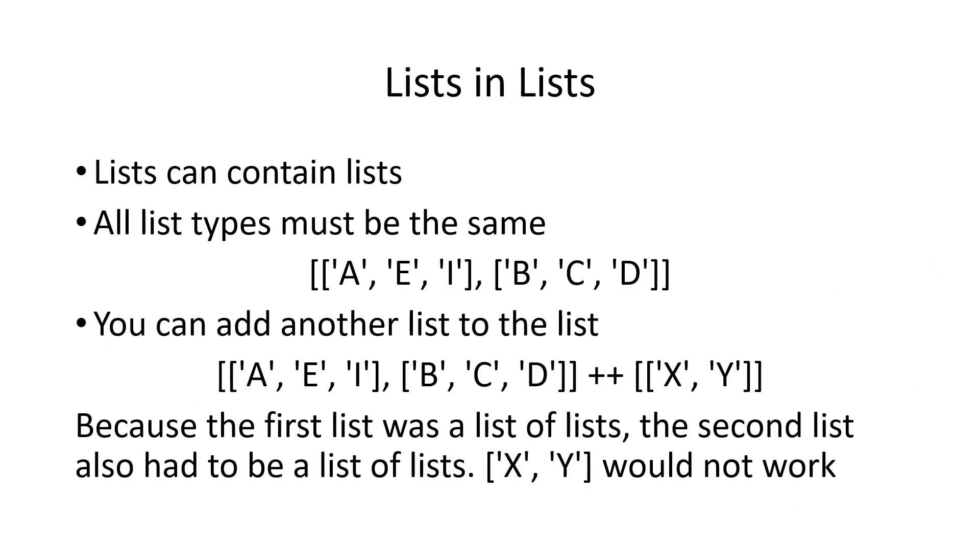A list contains lists of lists. Remember of course, that lists have to contain all the elements of the same type. So if you have a list of lists, each of the lists inside the list have to have elements of the same type. In this example here, we have lists of characters. We can then concatenate that list of characters with another list of characters.